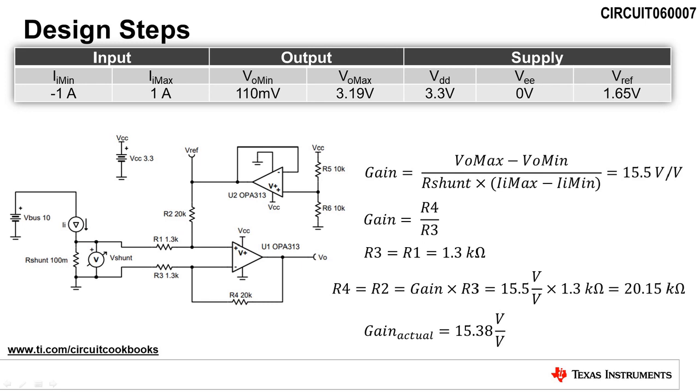The gain of the circuit is R4 divided by R3, because we set R1 equal to R3 and R2 equal to R4. Choosing a standard resistor value of 1.3 kilohms for R3 allows us to calculate a resistor value of 20.15 kilohms for R4 to give us a gain of 15.5 volts per volt.